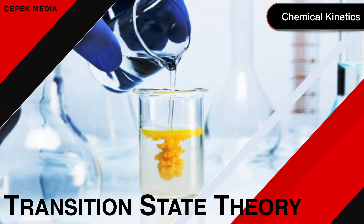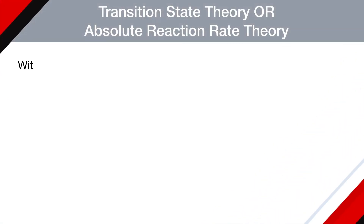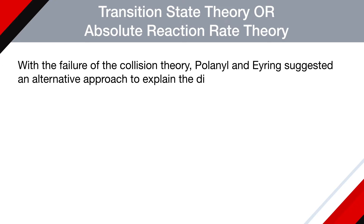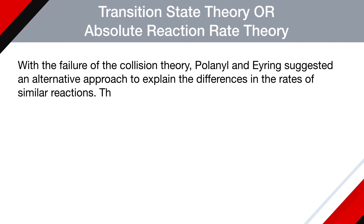Discuss Transition State Theory or Absolute Reaction Rate Theory. With the failure of collision theory, Polanyi and Eyring suggested an alternative approach to explain the difference in the rates of similar reactions. The theory is based on the following postulates.